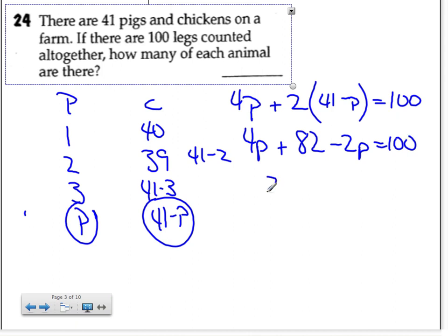Collecting like terms, I get 2P plus 82 equals 100. Subtract the 82 and I get 2P equals 18 and so P equals 9.